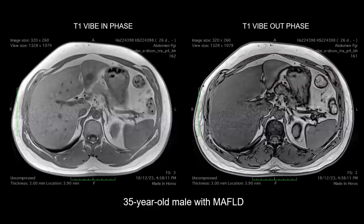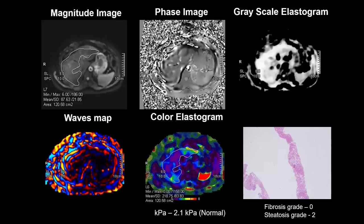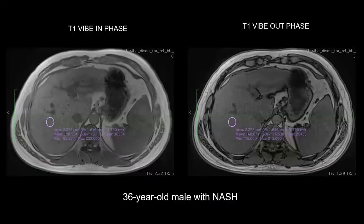This is a 35-year-old male patient with MAFLD. There is signal drop on the in-phase and out-of-phase images confirming fat. To determine whether fibrosis was present, we ran the MRE sequence. Looking at the magnitude image, phase image, grayscale elastogram, wave maps, and color elastogram — only shades of violet or blue are present, indicating no fibrosis. All these patients are also undergoing biopsies as part of ongoing studies and projects.